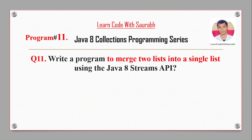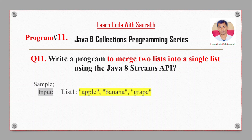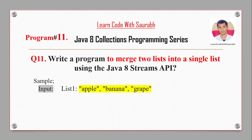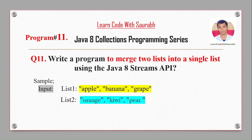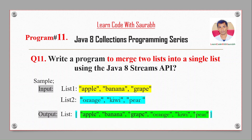Hi friends, welcome back to another video. Today I'm going to write a program to merge two lists into a single list using Java 8 Stream API. For example, if I have list one with some values and list two, after merging it will become a single list.